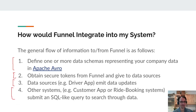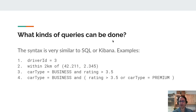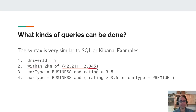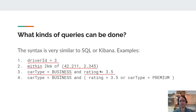What kind of queries can be done? It looks very similar to SQL. Here's a simple query on a single attribute: Driver ID equals 3. Then, because the system is built with geographic location in mind, it has a special clause called 'within' — for example, within 2 kilometers of a latitude-longitude coordinate — which does a geographic search and returns all relevant data.